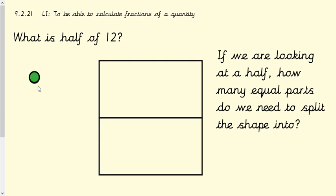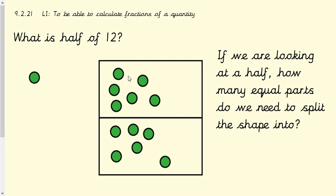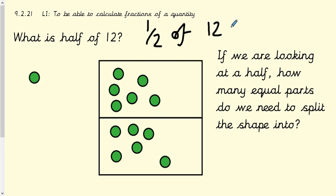I'm going to put 12 counters into each box equally — sharing them out or dividing them into these two boxes. I'll count them in one at a time into each section. So I've put 12 counters in each section equally, and it's in two sections because we're looking at half. Then all we do is count how many counters are in each section — that's six. So therefore, half of 12 equals six.